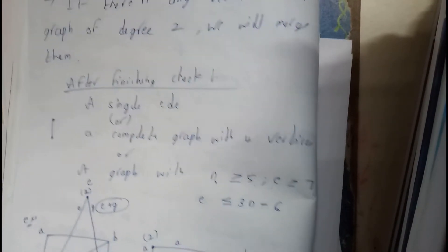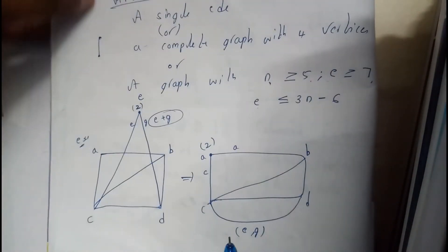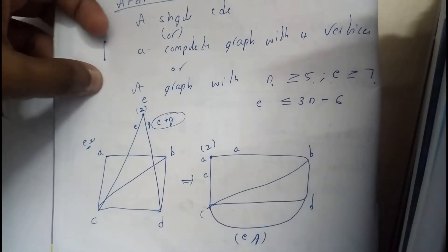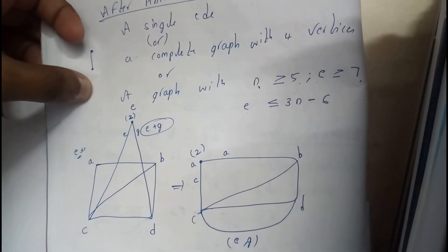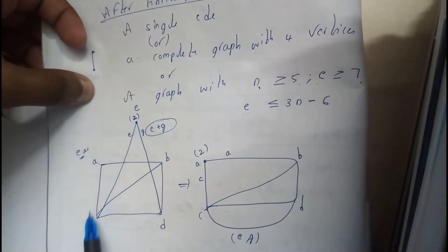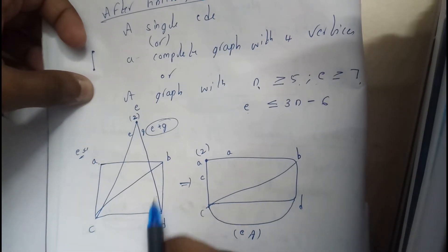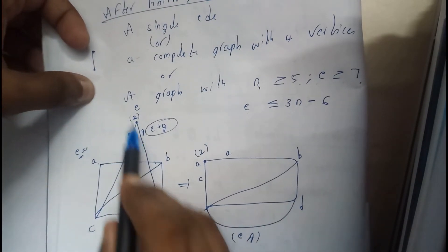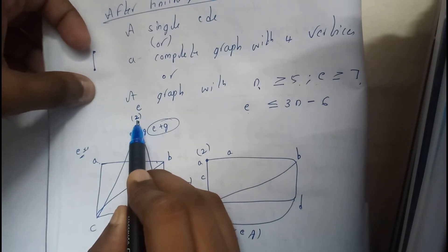Here the graph is given something like this. This is the graph that is given. Initially I am searching for degree 2. This is degree 2: one, two, three, four degree, three degree, three degree, two degree. I'll be starting here. This is also degree 2, so I'll be starting from here.